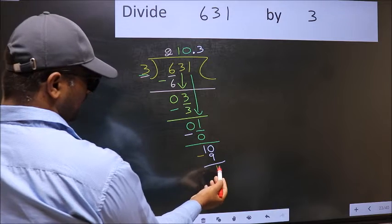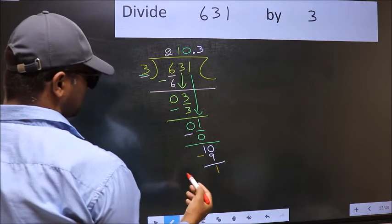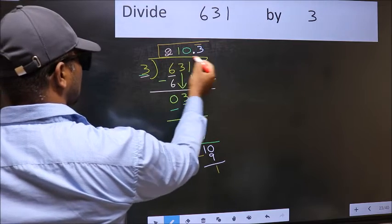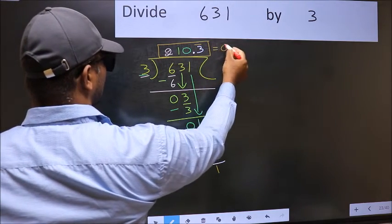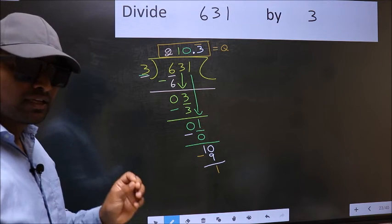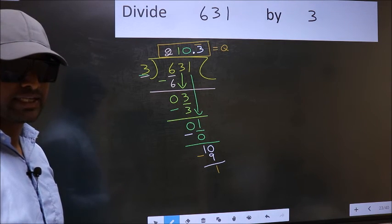We got 1 again. That means you get bar on this number. So this is our quotient. Did you understand where the mistake happens? You should not do that. Mistake.